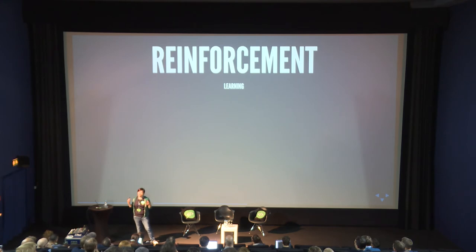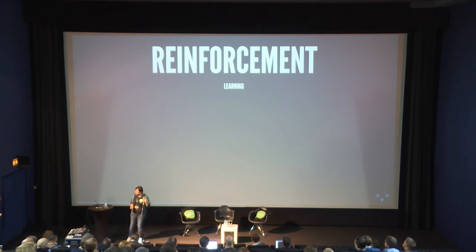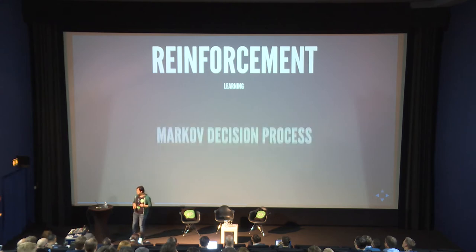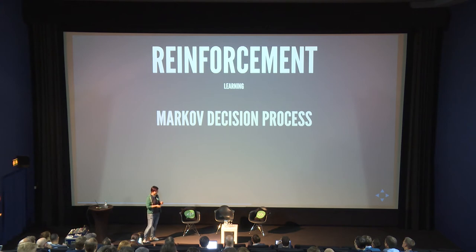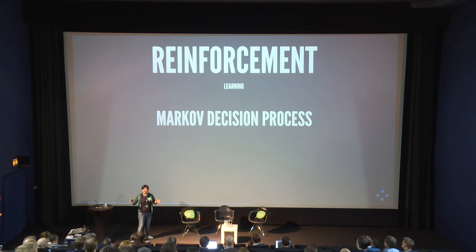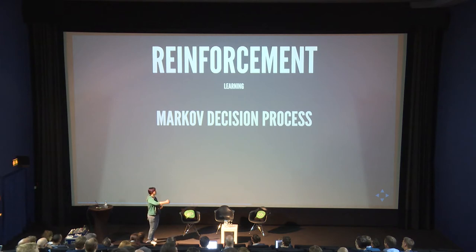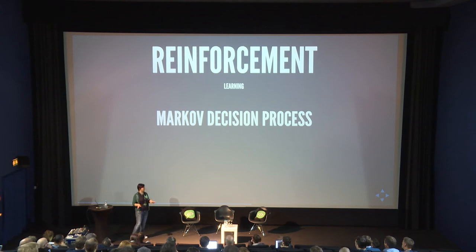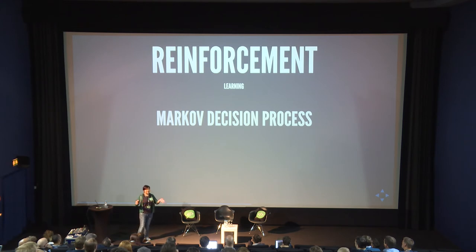Reinforcement learning has a very intuitive idea behind it. The first concept is the Markov decision process. A Markov chain is a statistical model with a chain of actions and states, already defined at the beginning. In a Markov decision process, there is decision making — in our example we have four possible actions, and each action has a specific reward tied to it, so you can make a decision.